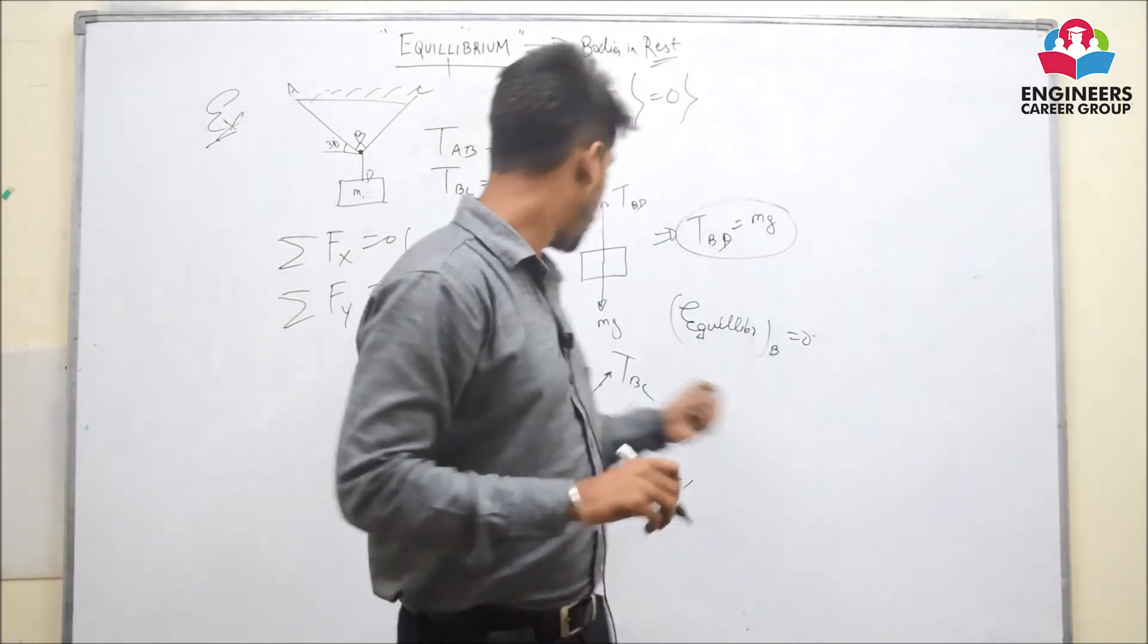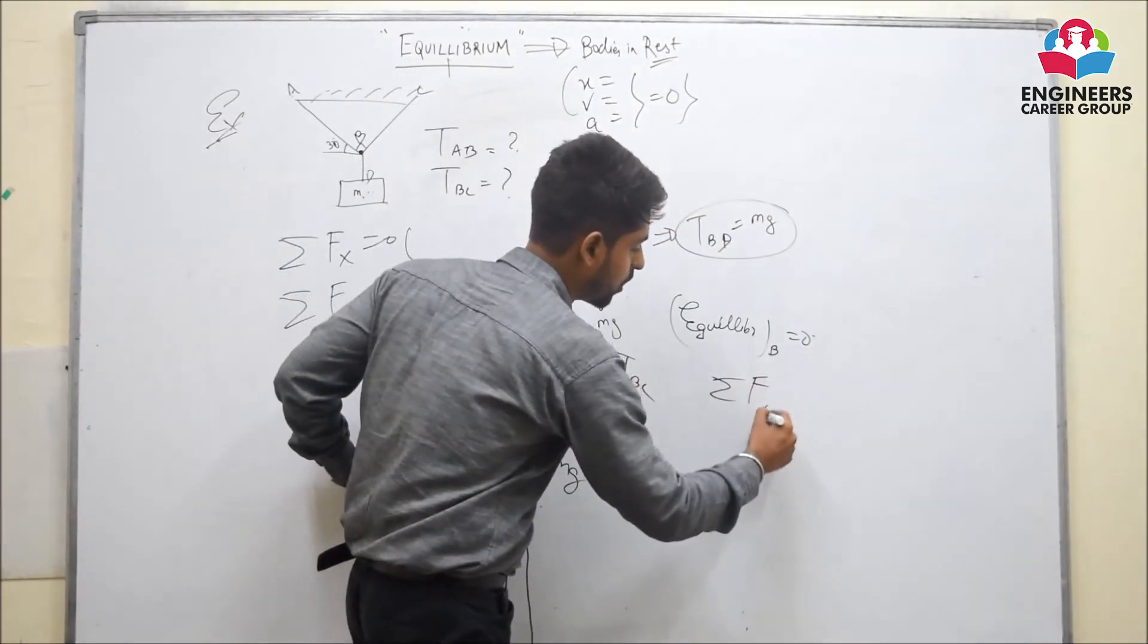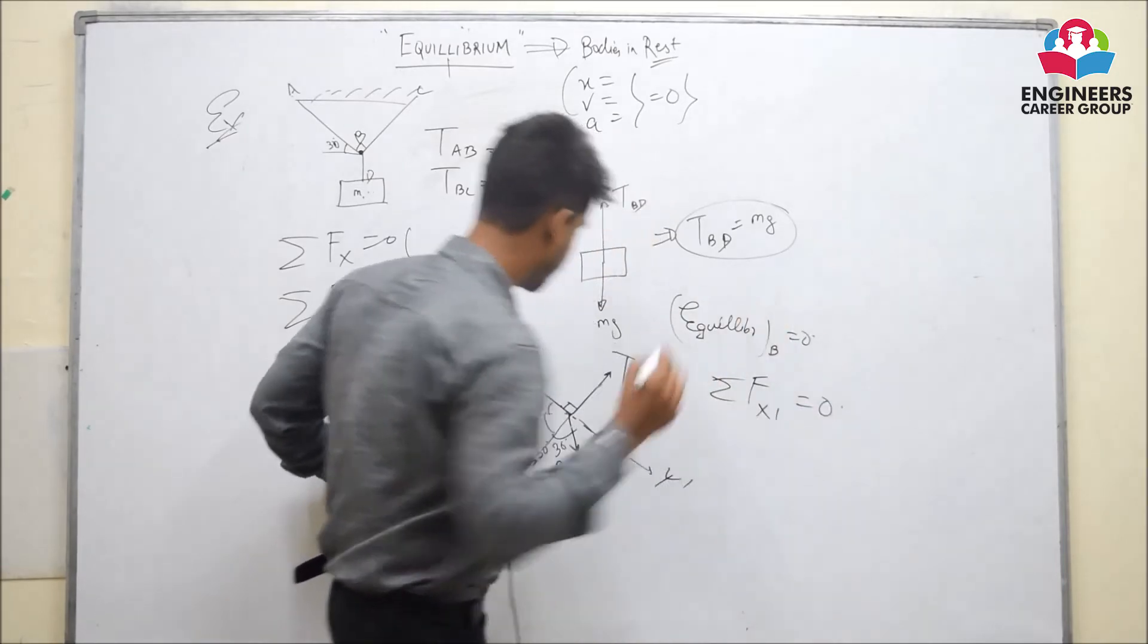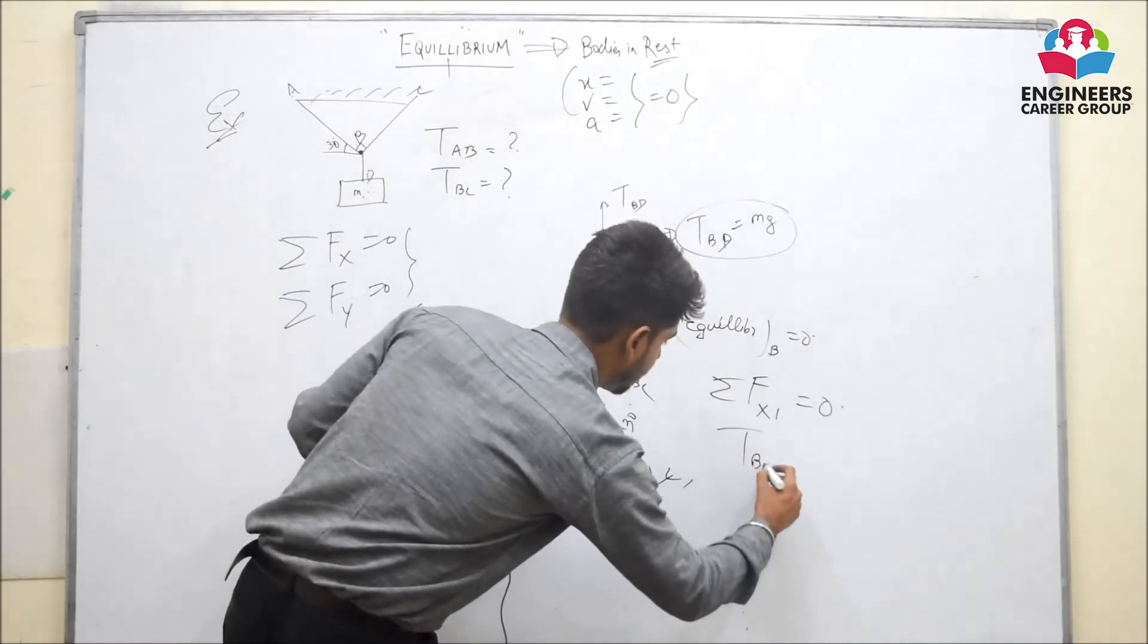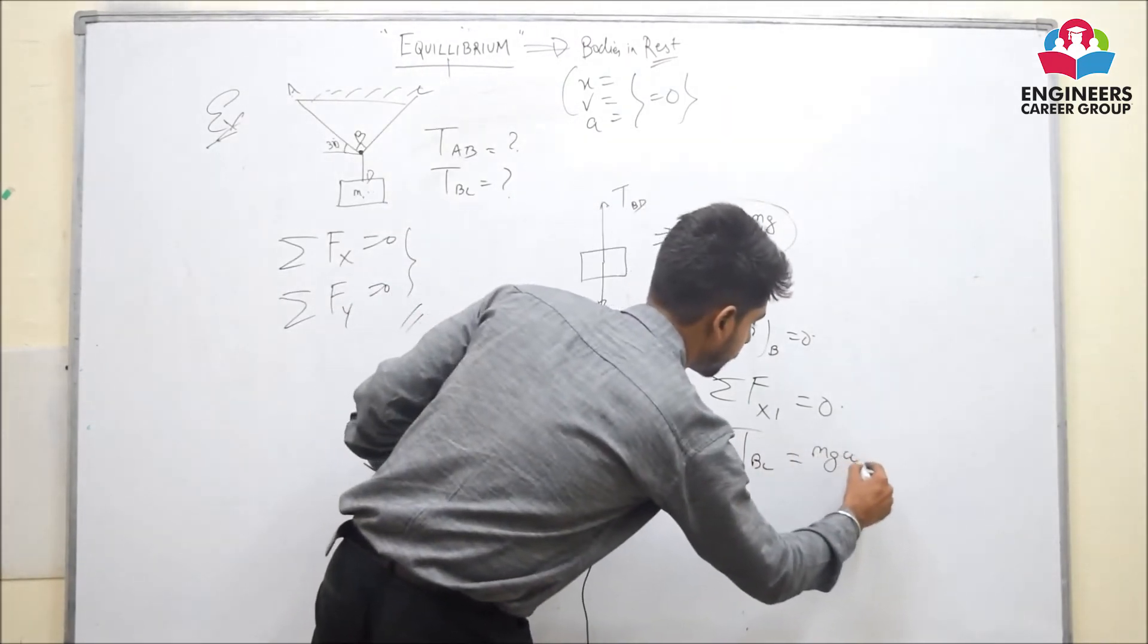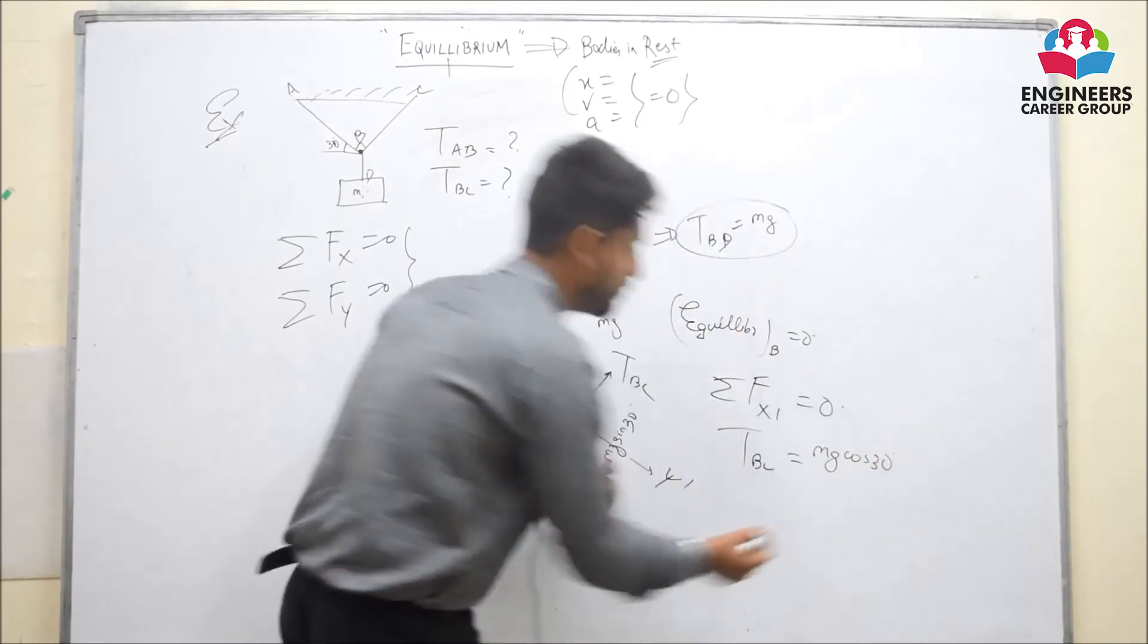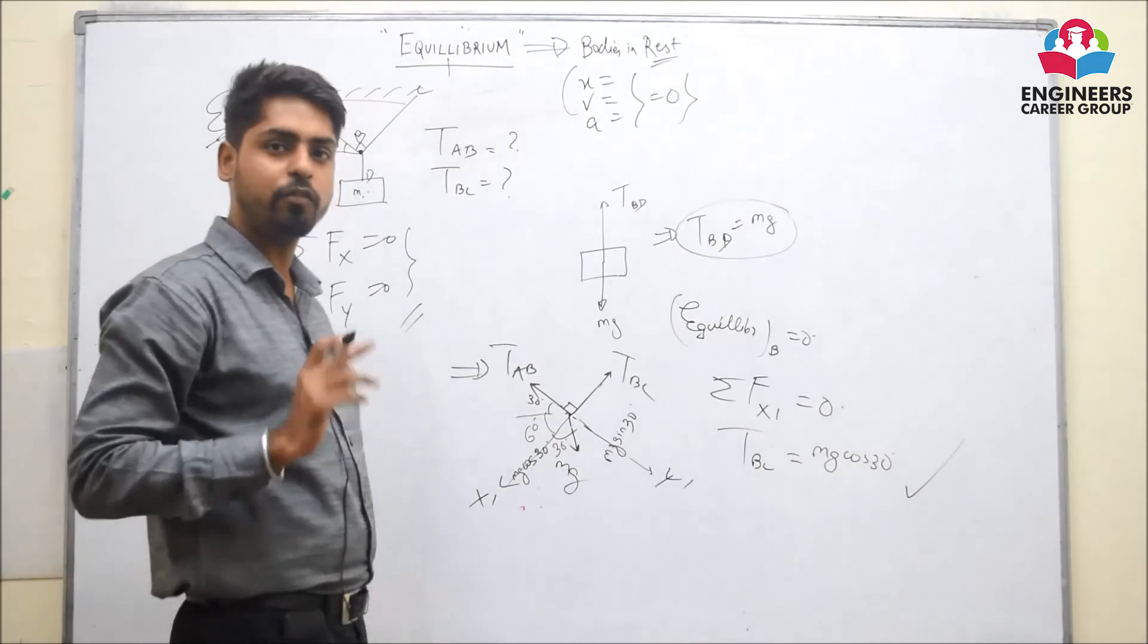Now since this point B is in equilibrium, so forces, summation of forces along x dash axis will be 0. Now, what is our x dash axis along this axis which is equal to T in BC is equal to Mg cos 30. Now, here Mg is known, angle 30 is known, so we can calculate this value very easily.